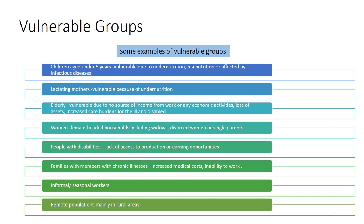People with disabilities who cannot work do not have earning opportunities. Women, female-headed households, single parents, and divorced women are very vulnerable if they can't participate in the labor market or participate only in the informal sector, giving them volatile or seasonal income. The elderly are also vulnerable because they may not have a source of income from work, and sometimes they are sick or disabled, increasing care burdens.